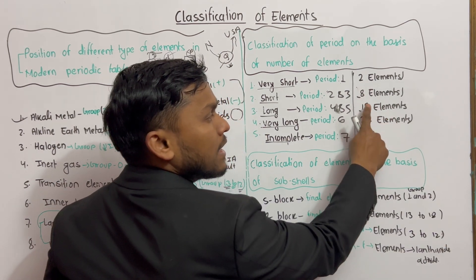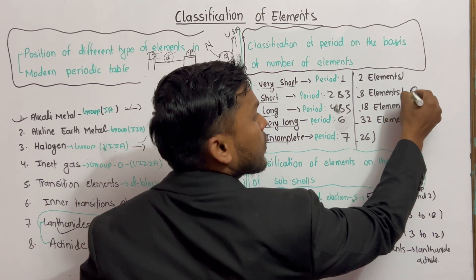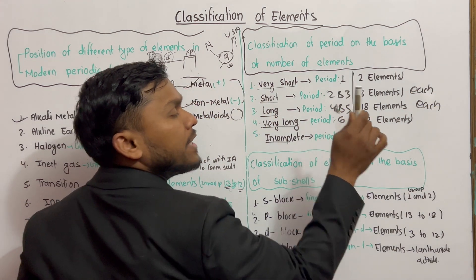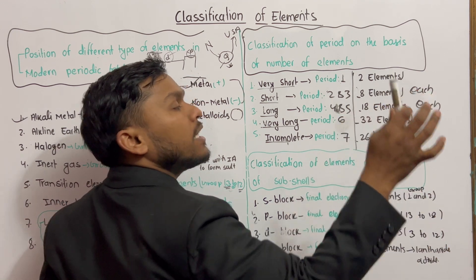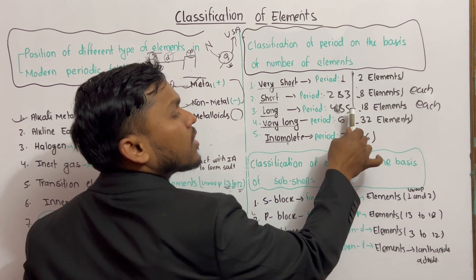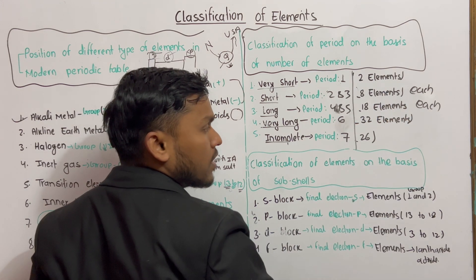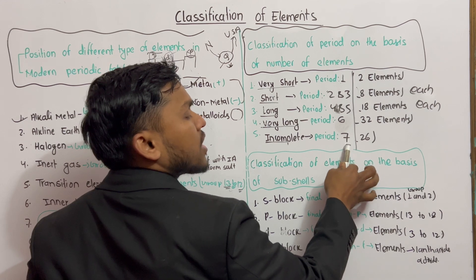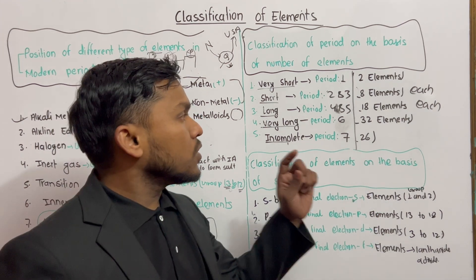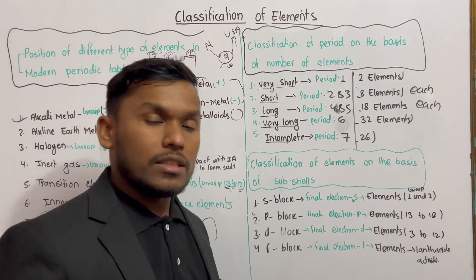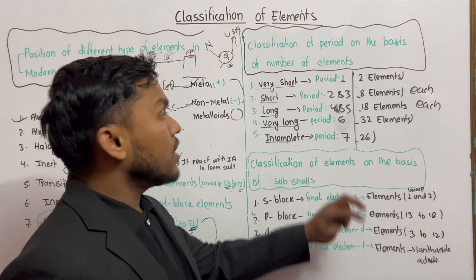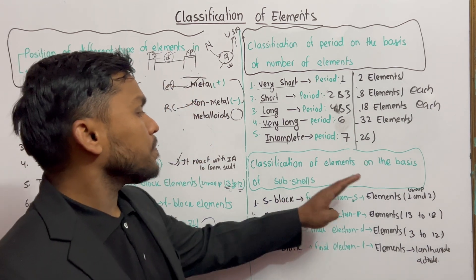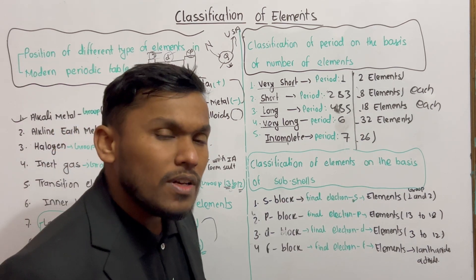Each one: two, eight, eighteen. Cause each one. Period 1 has 2, period 2 has 8, period 3 has 8, period 4 has 18. Period 5 has 18, period 6 has 32, and period 7 is incomplete. This is a classification of elements on the basis of block.